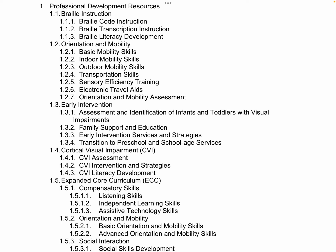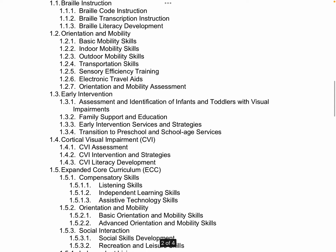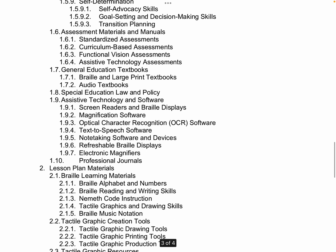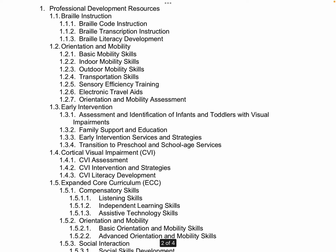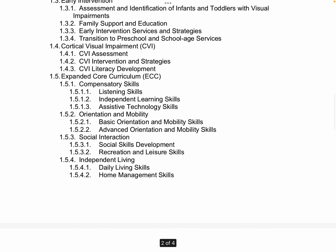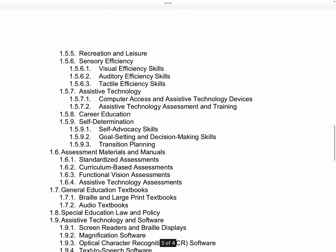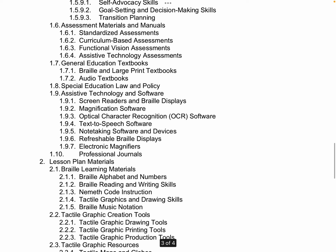There are two sections. In professional development resources, it is categorized by: Braille instruction, orientation and mobility, early intervention, CVI, expanded core curriculum, assessment materials and manuals, general education textbooks, special education law and policy, assistive technology and software, and professional journals.